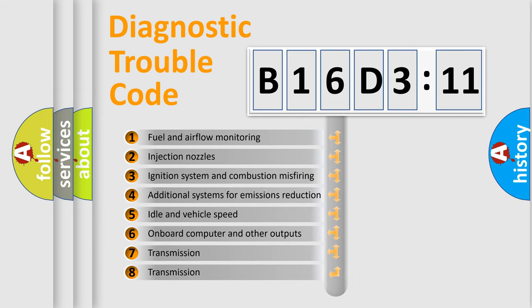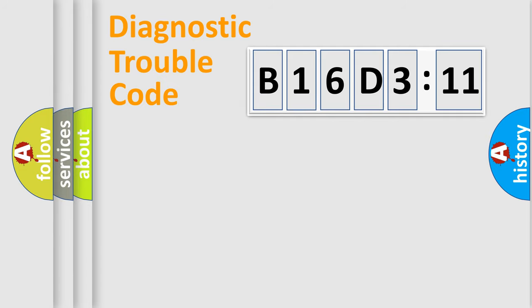The third character specifies a subset of errors. The distribution shown is valid only for the standardized DTC code. Only the last two characters define the specific fault of the group.